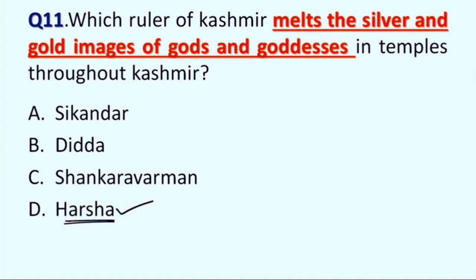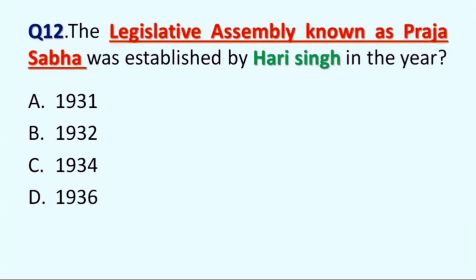Next question is: the legislative assembly known as Praja Sabha was established by Hari Singh in the year: Option A: 1931, B: 1932, C: 1934, and D: 1936. Correct answer is Option C, 1934. The legislative assembly, also known as Praja Sabha, was established by Hari Singh in the year 1934.